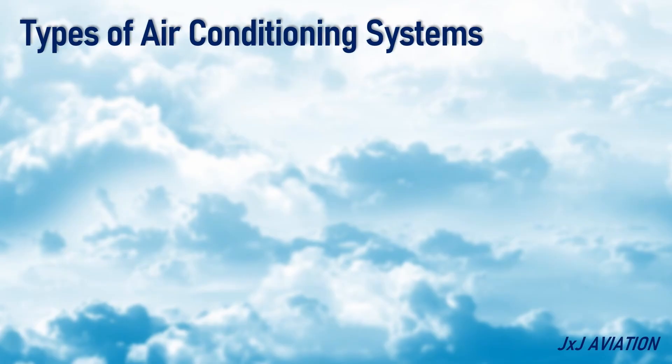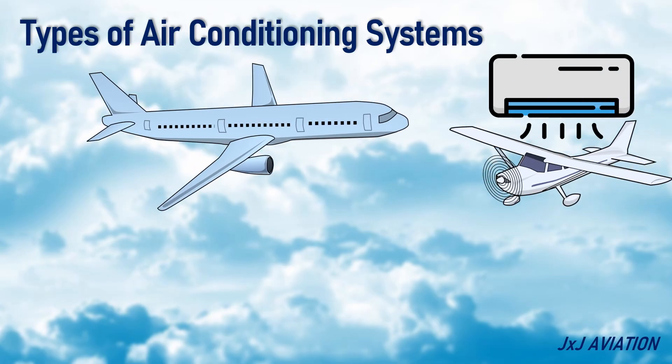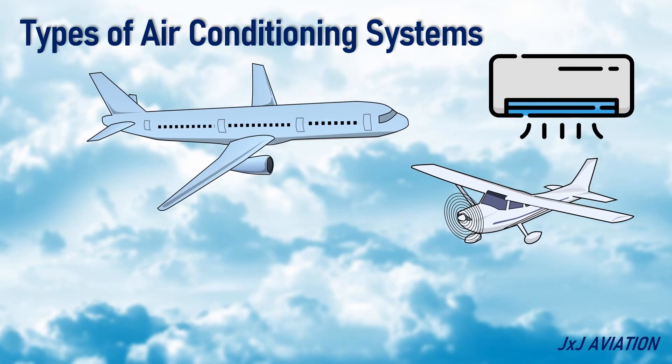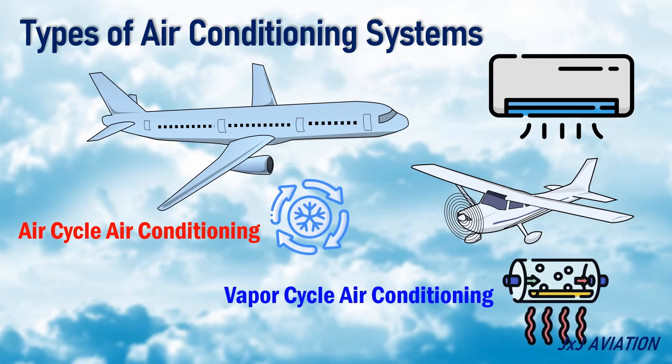The Types of Air Conditioning Systems. Depending on the type of aircraft, there are different types of air conditioning systems that may be installed. The major types are air cycle air conditioning and vapor cycle air conditioning. Let's look at these in more detail.